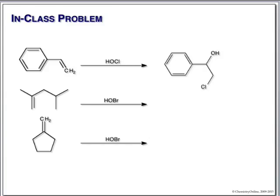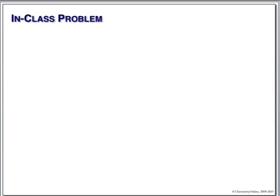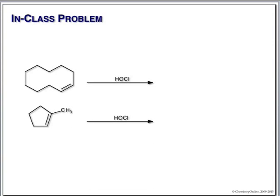Adding to a simple alkene — regiochemistry only: tertiary carbon, primary carbon, hydroxyl group on the tertiary carbon. For the exocyclic double bond, the tertiary carbon gets the hydroxyl group and the halogen goes on the primary carbon. For the last two hypohalite examples: when there's no difference in the double bond carbons, all we have to do is clearly show the hydroxyl group and chlorine add trans to each other.